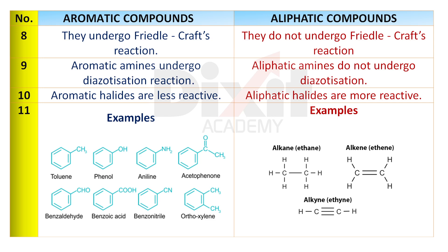Point 11: The common examples of aromatic compounds are benzene, toluene, phenol, aniline, etc. The common examples of aliphatic compounds are alkanes, alkenes, alkynes, etc.